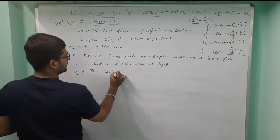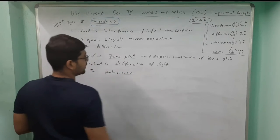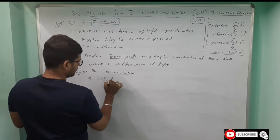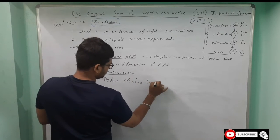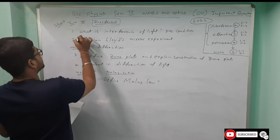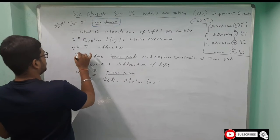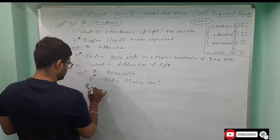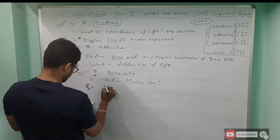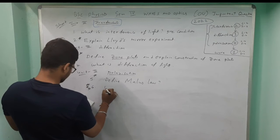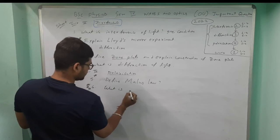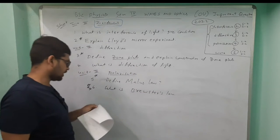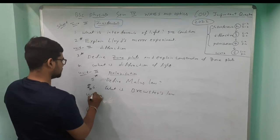Unit four short answer questions for Polarization. Fifth question: define Malus's Law — this is an important and straightforward question. Sixth question: explain Brewster's Law — this is three stars, very much important for polarization.